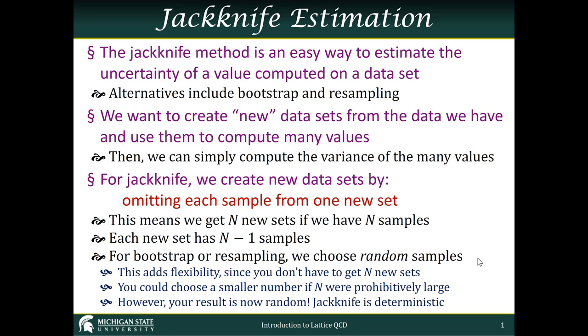This differs from bootstrap or resampling, where you choose random samples from your original dataset. That adds a lot of flexibility because you don't have to get exactly n new sets. If n were really huge, you might want a much smaller number of new datasets, or else you'd be doing calculations to the end of the universe. However, in Lattice QCD, our n tends to be relatively small, or we can block the data in order to get it down to a manageable amount.